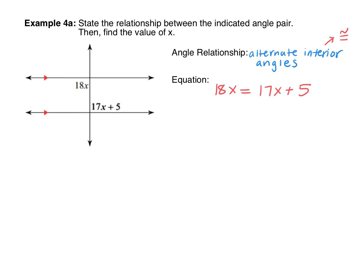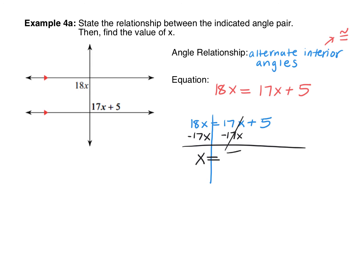Since these two angles are congruent, they have the same measure, so we set the expressions equal: 18x equals 17x plus 5. That's the equation. To solve: subtract 17x from both sides — 18 minus 17 is 1, so we get x equals 5. Our final answer is x equals 5.